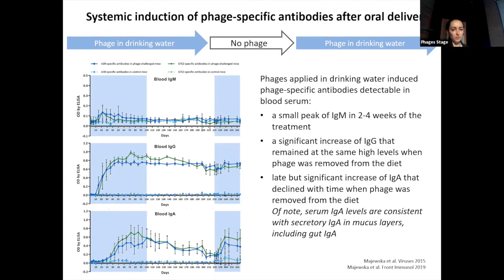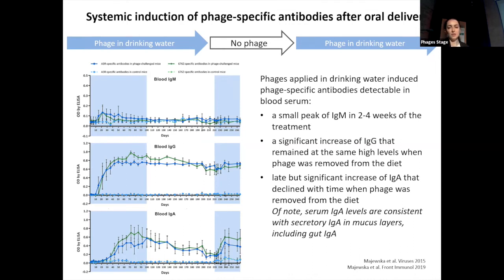What is important and useful in terms of phage therapy: serum IgG levels are consistent with secretory IgA in mucus layers, including gut IgA. The control mice were not treated with phages. These presented results refer to Staphylococcus phages, but we get the same results for T4 phages.